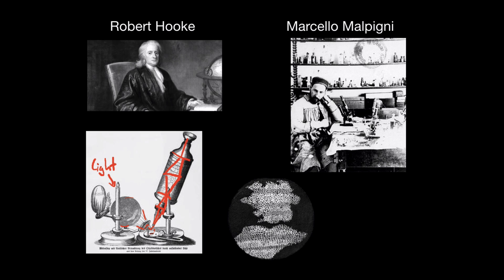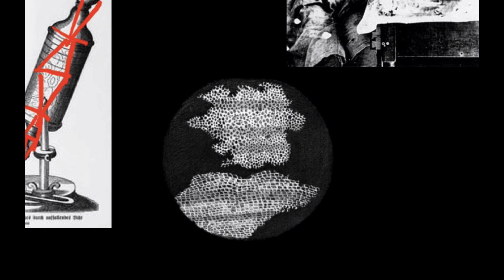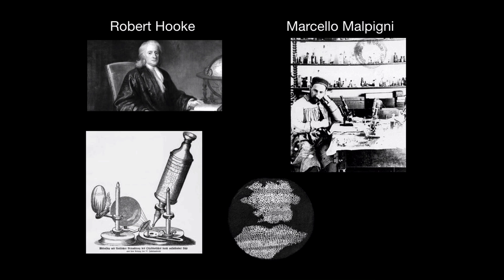With those lenses they could actually see the cells of the specimen they were looking at. Here's what they looked at — this is a bark tissue from a tree called cork oak. So this is a plant eukaryotic cell, and each black spot represents one eukaryotic cell.